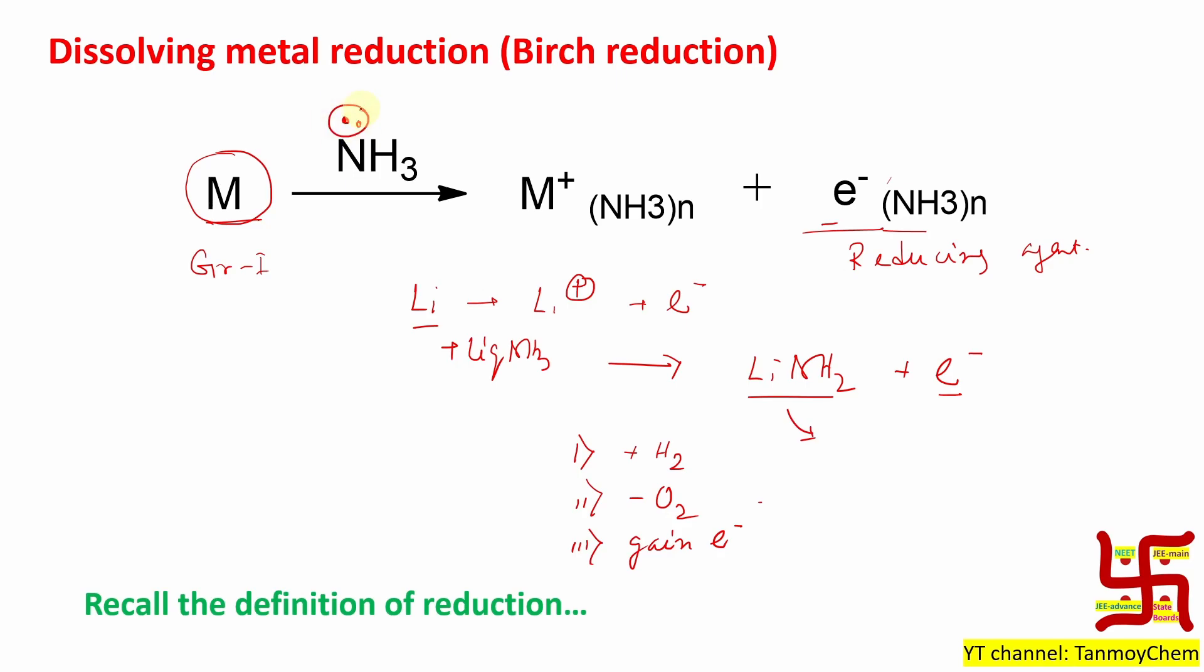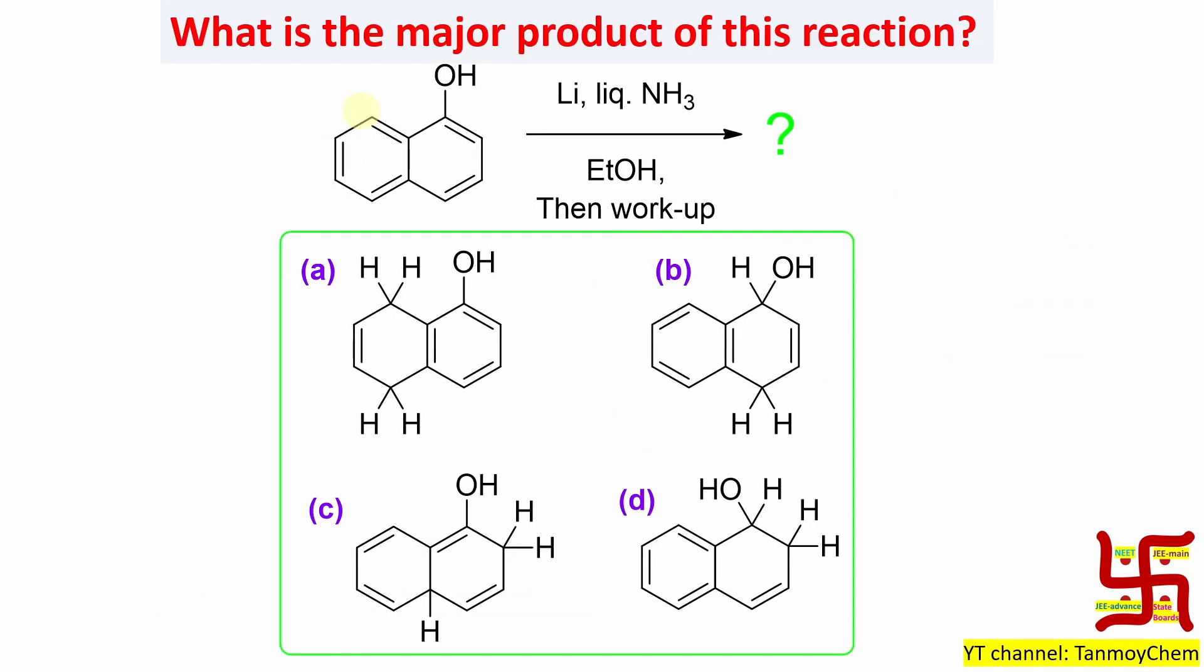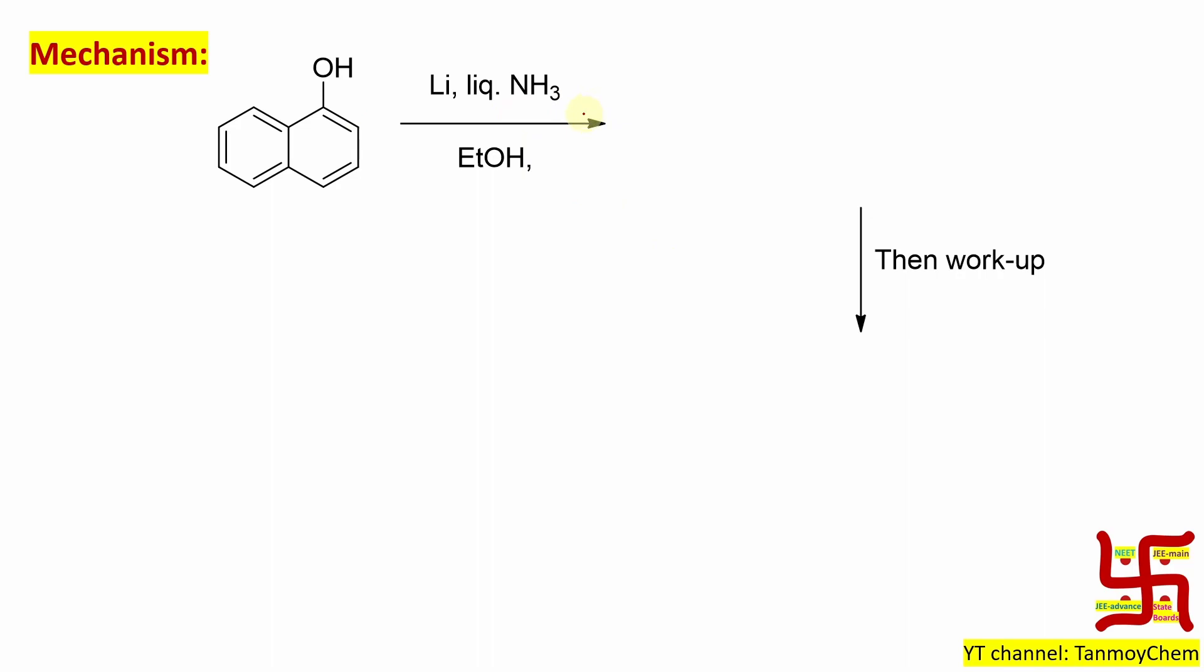We know phenols or alcohols are significantly acidic, so this OH will react violently first with this reaction medium and will end up as the phenoxide derivative, more accurately lithium phenoxide.